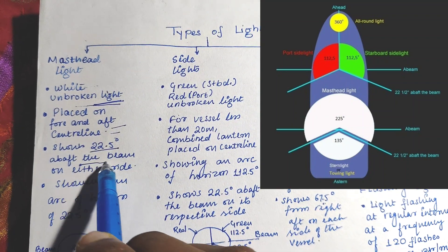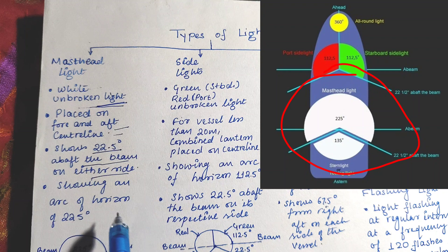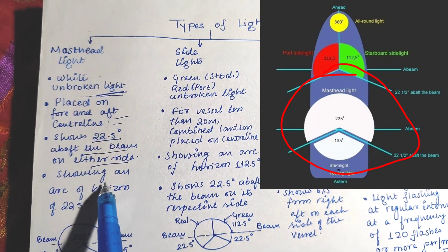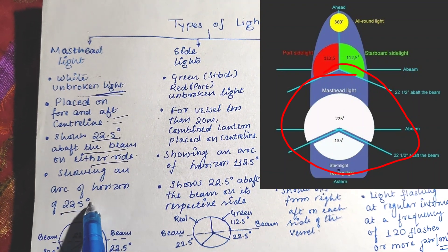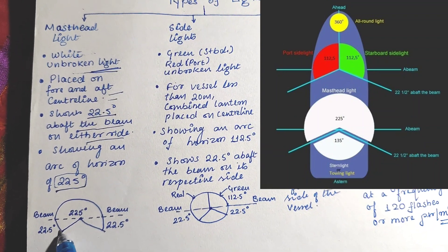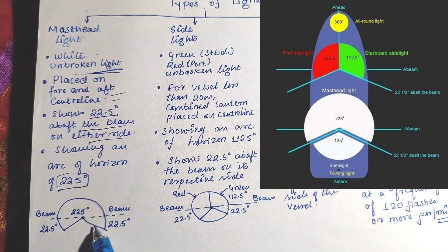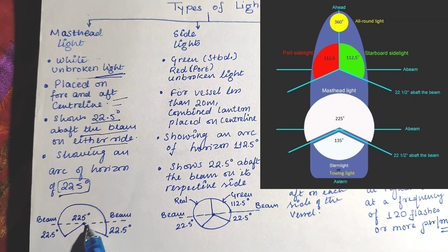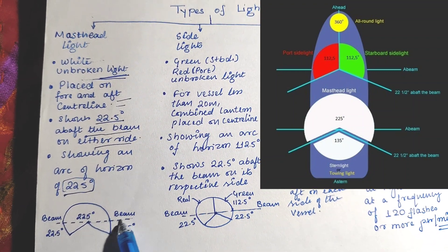This is how it looks: 225 degrees and 22.5 degrees above the beam. This is the beam, and this is 22.5 degrees.